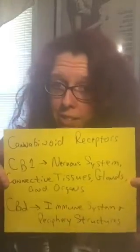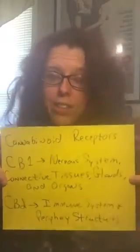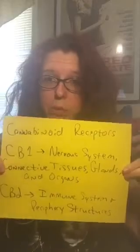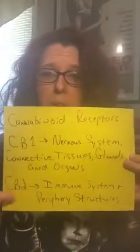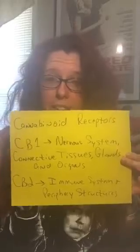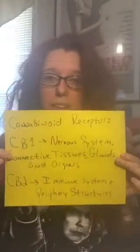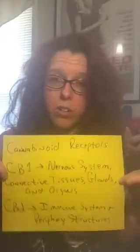CB1 receptors are also found in your glands — like your pituitary glands and hypothalamus — and also in your organs. CB2, the receptor that attaches to certain compounds within cannabis, is found in your immune system and other peripheral structures spread out all over your body.